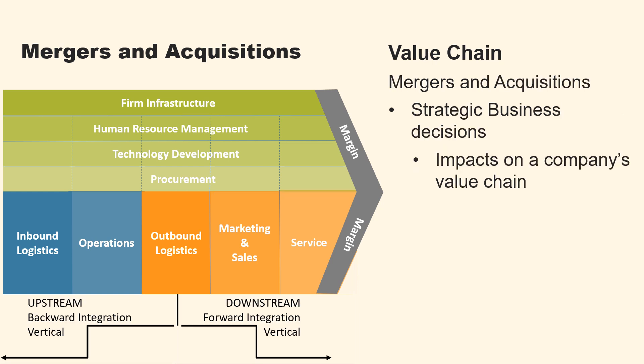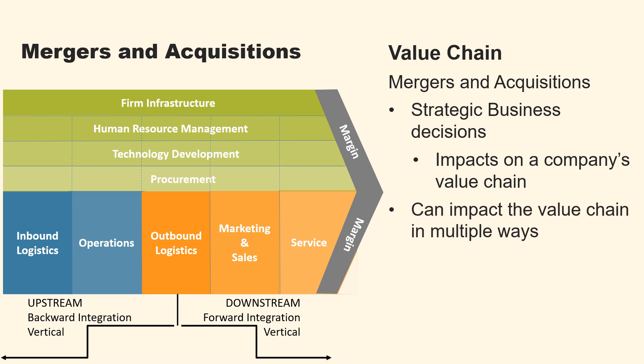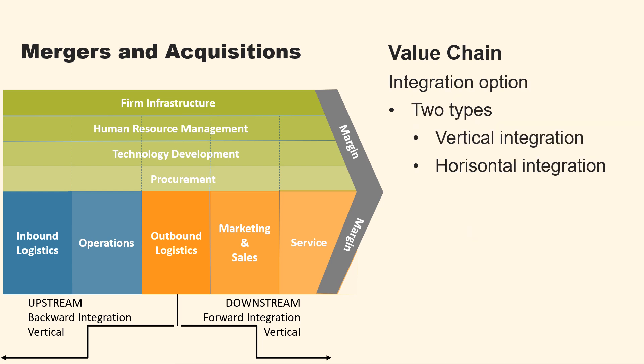Mergers and acquisitions are strategic business decisions that significantly impact a company's value chain. When a company finalizes an acquisition or merger, it can impact the value chain in multiple ways. There are two primary types of integration: vertical integration and horizontal integration.